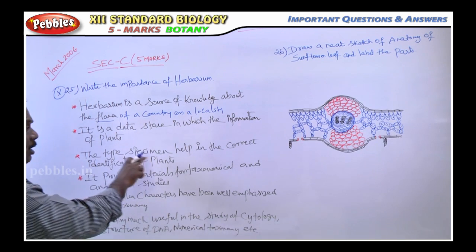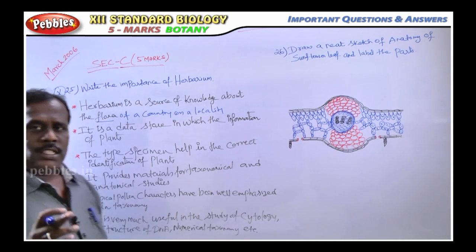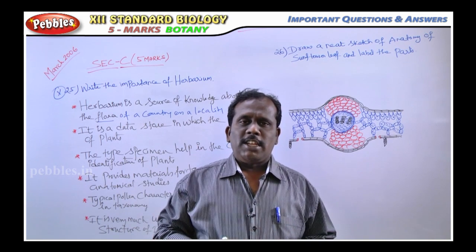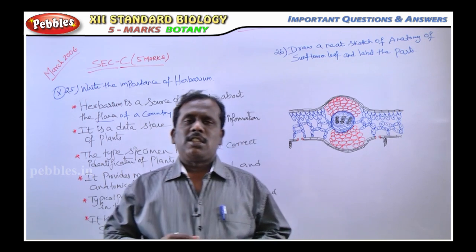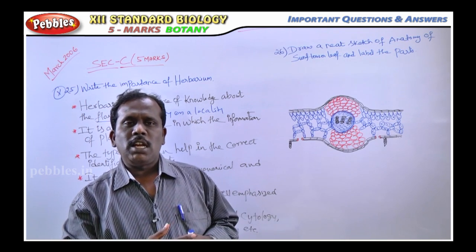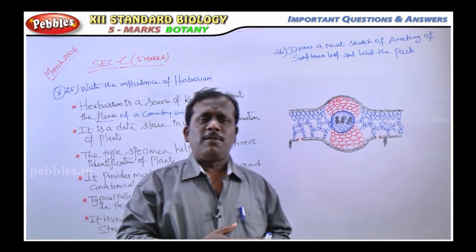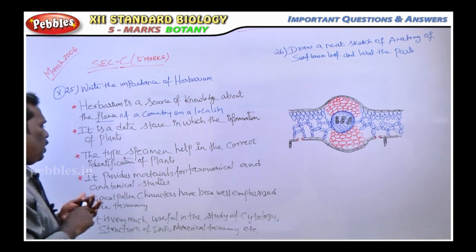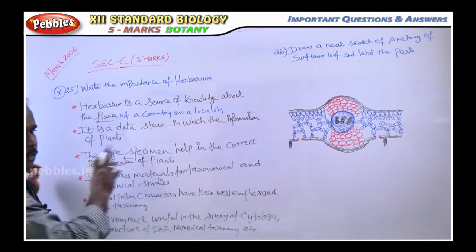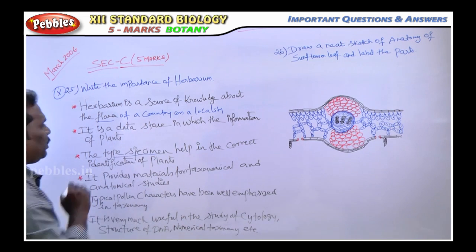The third point: the type specimen helps in the correct identification of plants. In previously discussed three-mark questions, type specimen was covered because in any recognized herbarium centers they have already prepared and stored herbarium specimens. So this type specimen is helpful for correct identification. The key answer is type specimen.